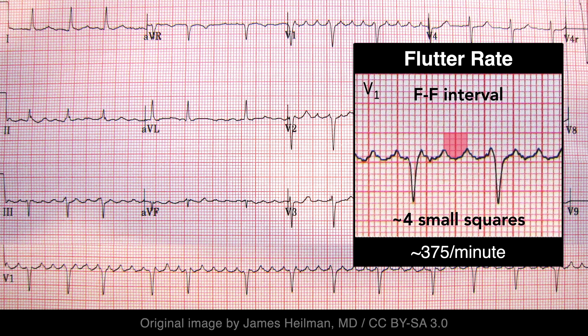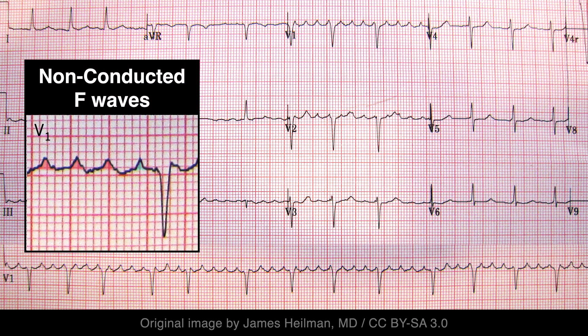In this case, the flutter rate is about 375 per minute. Although the flutter rate can be very rapid, typically only a portion of impulses are conducted to the ventricles. Physiologic conduction delay at the AV node usually limits the AV conduction ratio to between 2:1 and 4:1. If the AV conduction ratio is constant, then the rhythm will be regular; otherwise the R-R intervals will be unequal.